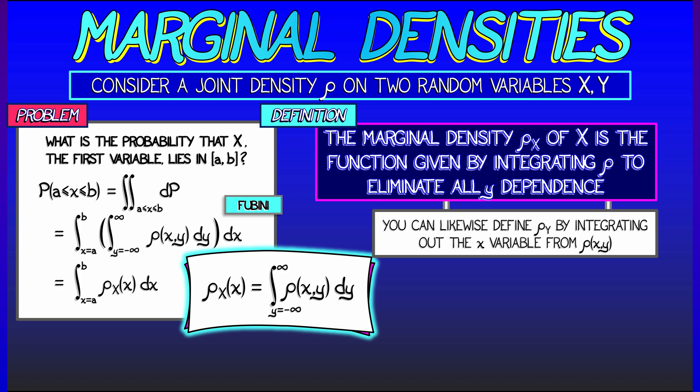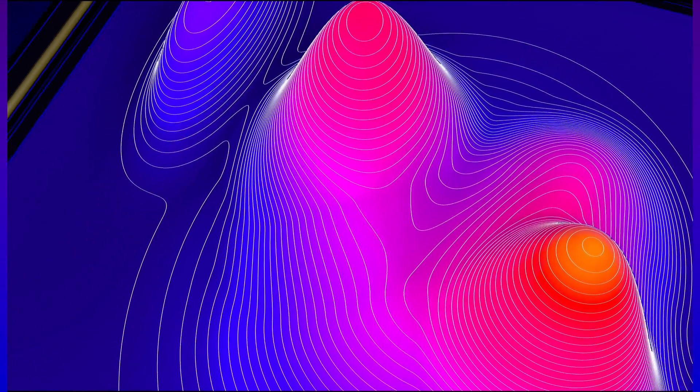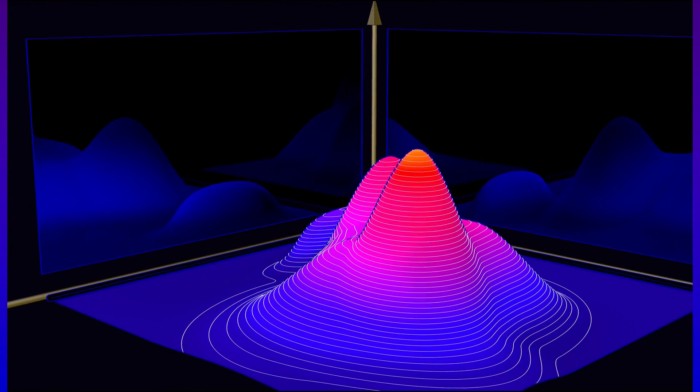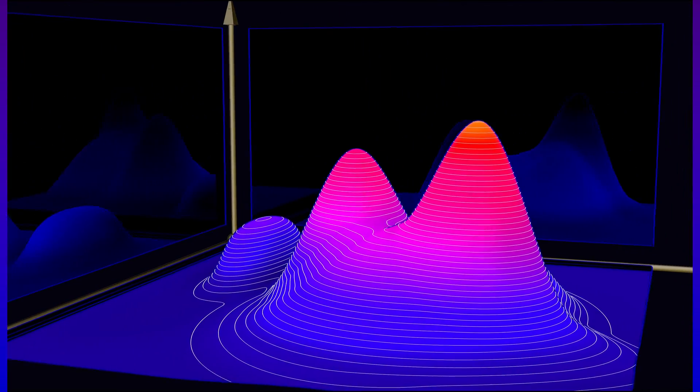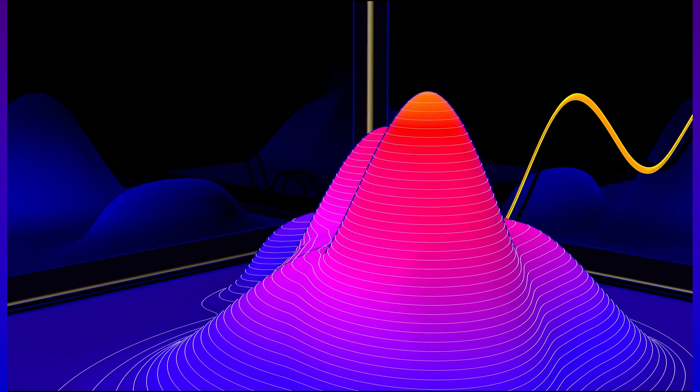Now, it's worth taking a moment thinking about this process of marginalization, how you start off with a joint density in two variables, and you pick one direction, let's say x, and you integrate that out to get a probability density on the y-axis.